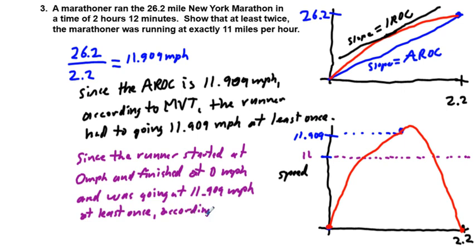Since the runner started at 0 miles per hour and finished at 0 miles per hour and was going at exactly 11.909 miles per hour at least once, according to the Intermediate Value Theorem, the runner was going 11 miles per hour at least twice.